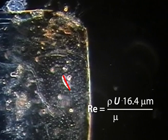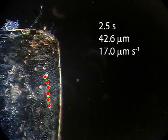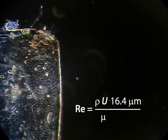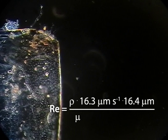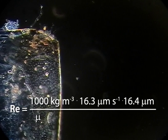We then measure how far the protist has swum and how long it took, divide distance by time, and we have the swimming speed — that's U in the Reynolds number formula — about 16.3 micrometers per second, or one body length per second. Now we need the density of water, rho, which is about 1,000 kilograms per meter cubed, and water's viscosity, mu, which is about 0.001 pascals per second.